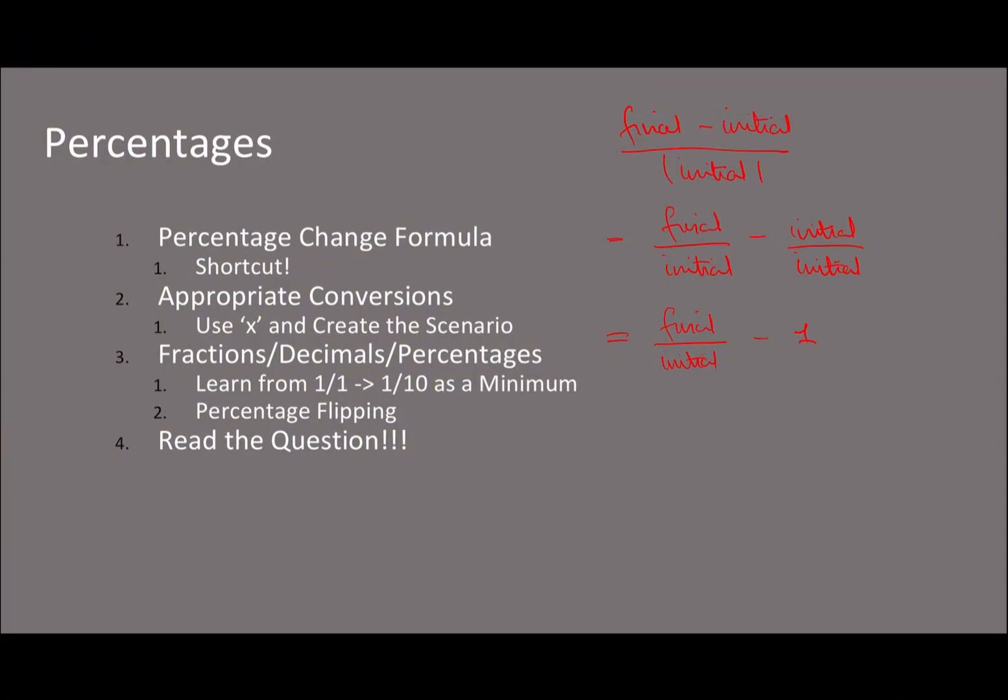So final minus initial subtracted by the initial divided by the initial. And if we keep following this down, so initial divided by initial is just 1 right. So because final minus initial, final divided by initial minus just 1. So this is your formula, and so in this case the modulus sign doesn't really apply, we don't have to worry about it.